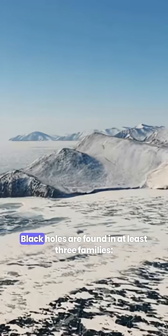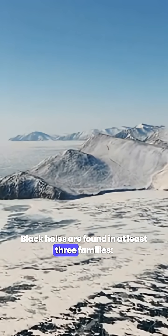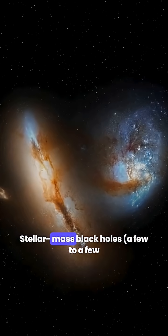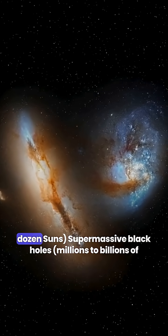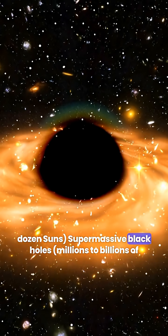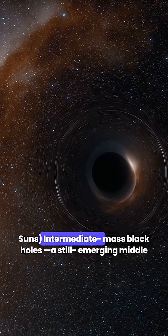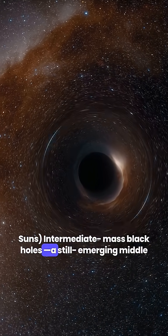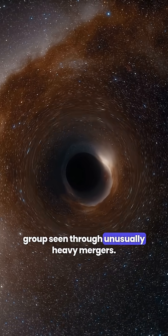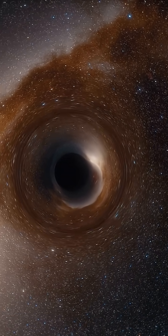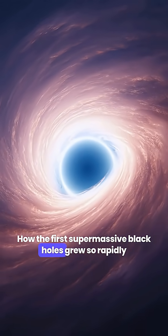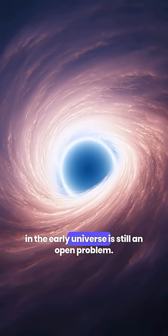Black holes are found in at least three families: stellar-mass black holes (a few to a few dozen suns), supermassive black holes (millions to billions of suns), and intermediate-mass black holes—a still-emerging middle group seen through unusually heavy mergers. How the first supermassive black holes grew so rapidly in the early universe is still an open problem.